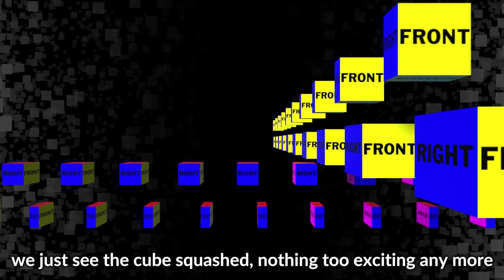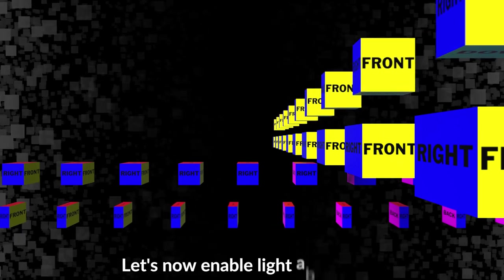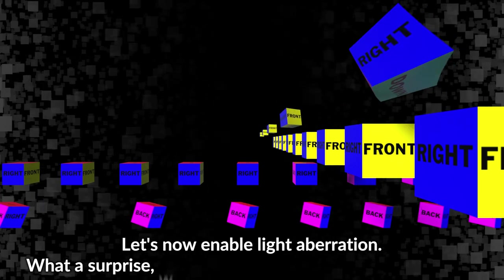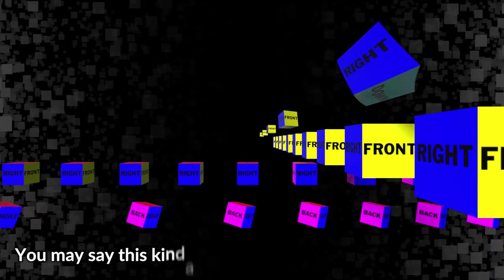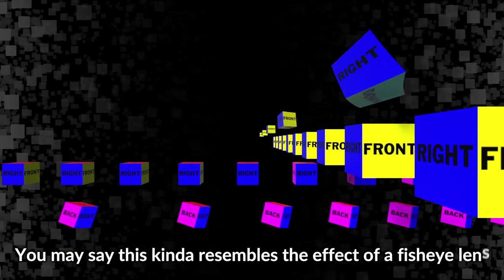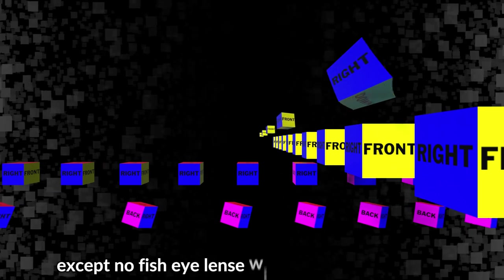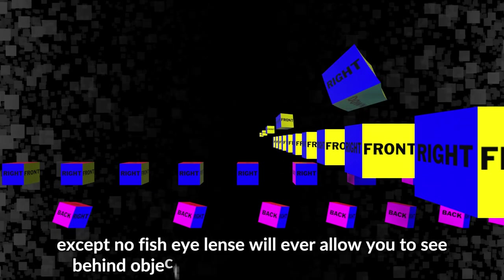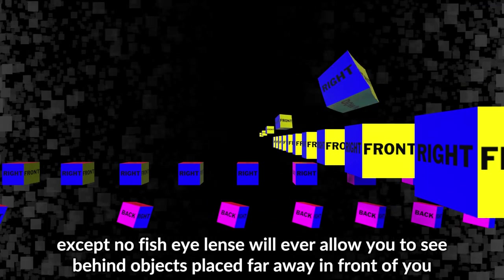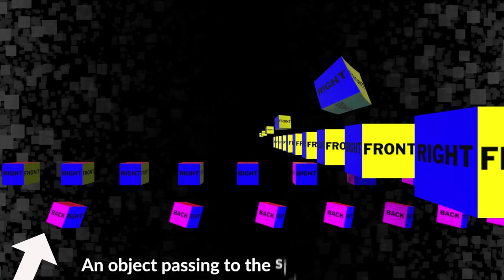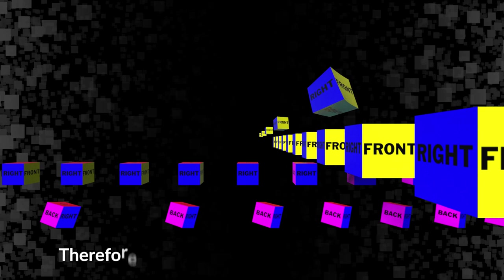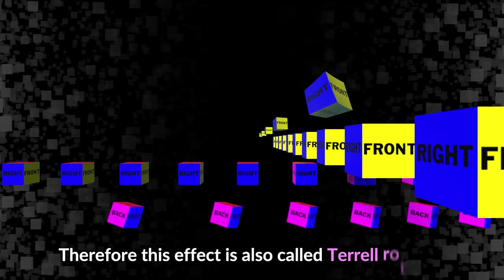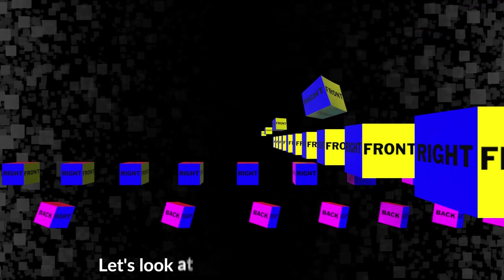Let's now enable light aberration. What a surprise - we start seeing the back side of the cube! You may say this kinda resembles the effect of a fisheye lens, except no fisheye lens will ever allow you to see behind objects placed far away in front of you. An object passing to the side in front of you at some point will look like it's rotated, therefore this effect is also called Terrell rotation.